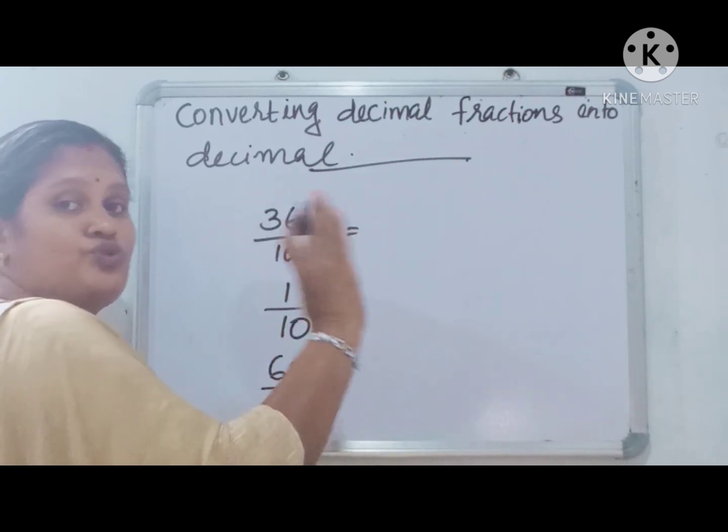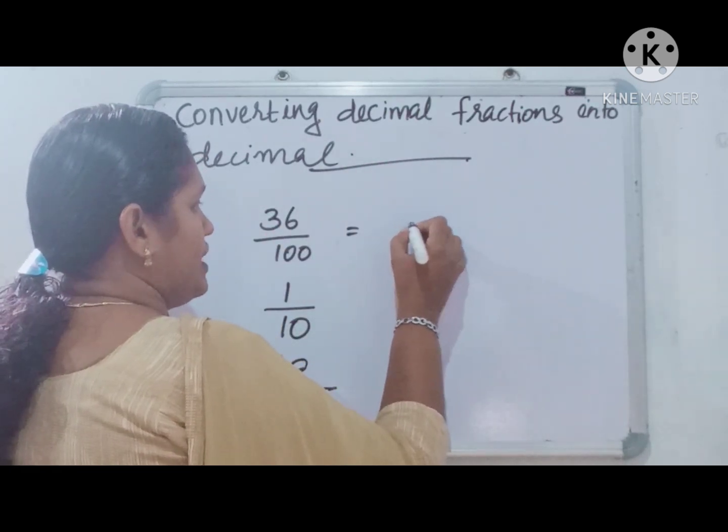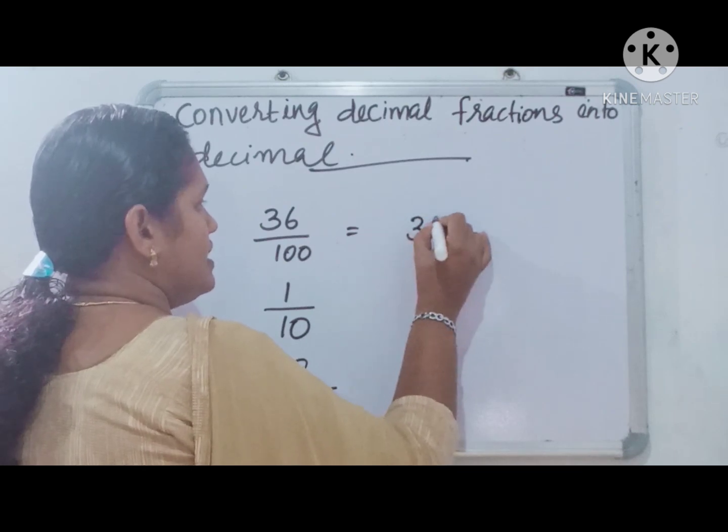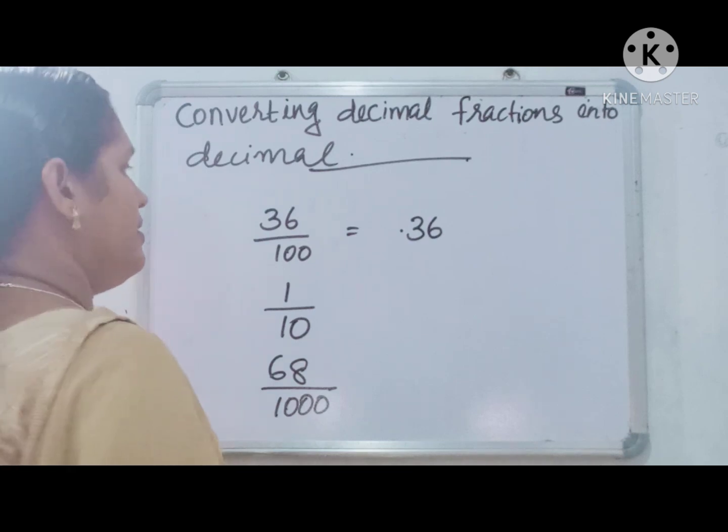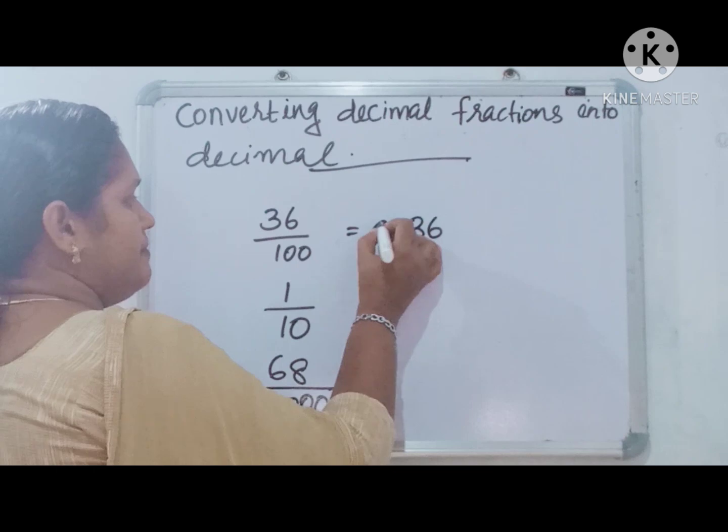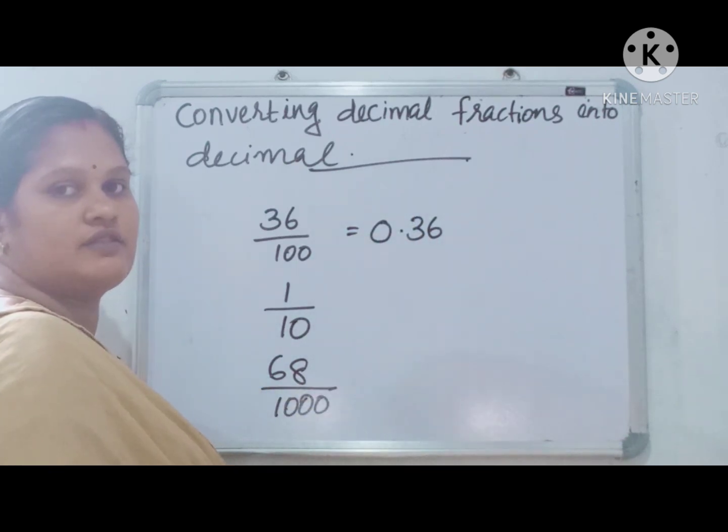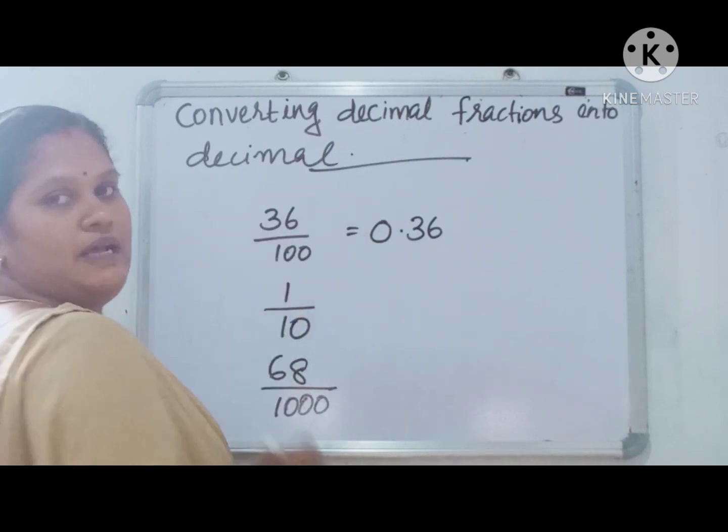We have to move 2 places forward and put decimal point. Here 36, then 0. There is no number here, so we can write here 0. 0.36 is the corresponding decimal number.